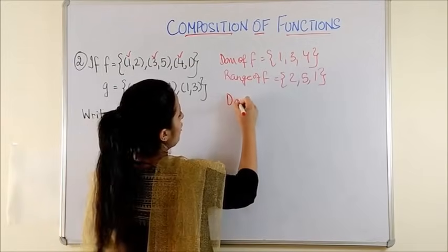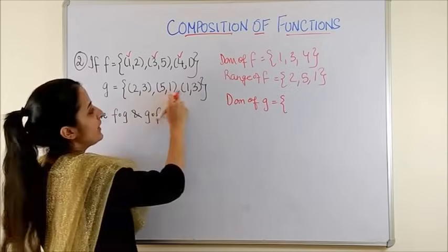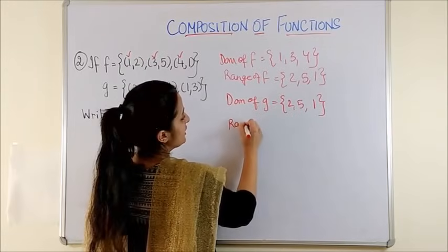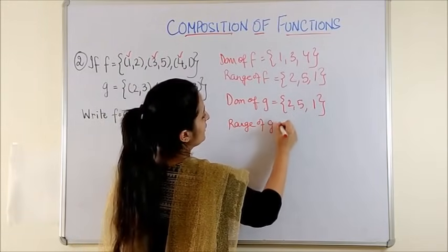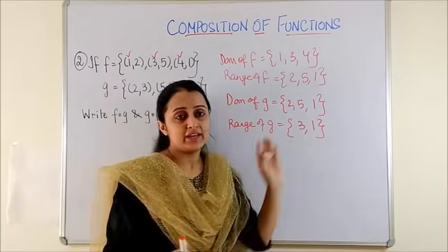Similarly, domain of G would be 2, 5 and 1. And range of G would be 3, 1. These are the domain and range.